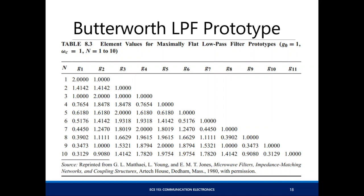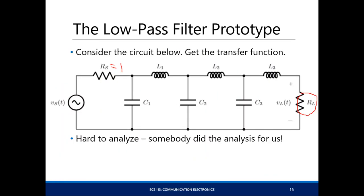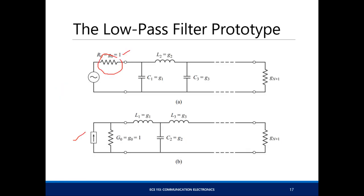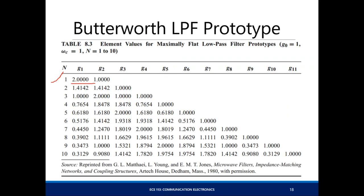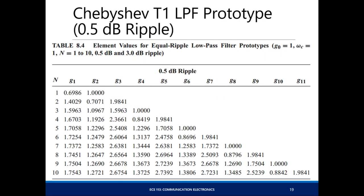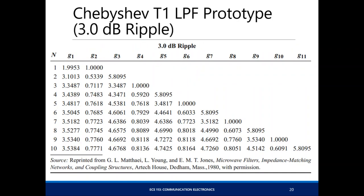It's low-pass because if F approaches infinity, none of the power gets to the load since all capacitances are shorted and all inductances are open. The source resistance is normalized to 1, and the values of all elements are found in the table. The Butterworth prototype values are listed here: for a first-order filter, G1 equals 2 and G2 equals 1. For 0.5 dB Chebyshev type 1 and 3 dB ripple, these are the respective table values.